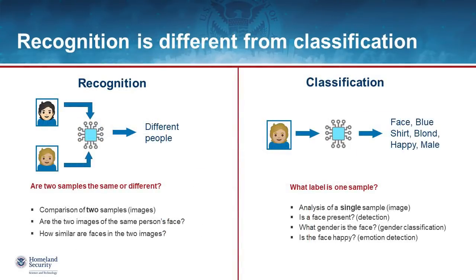Many people may have heard of another kind of technology that uses a picture of your face called facial analysis or facial classification. It's important to know that these two technologies are not the same and in fact do very different things. Face recognition programs measure the similarity between two faces. The easiest way to tell if a computer is performing a face recognition task is if it requires two or more faces in order to make a determination and if it's answering questions about how similar those two faces are.